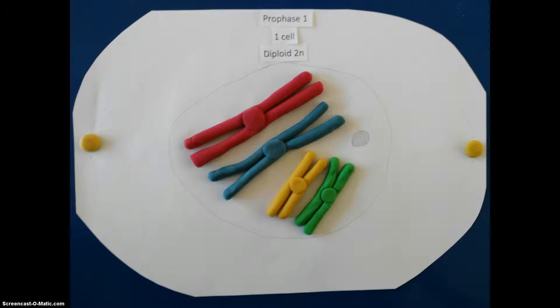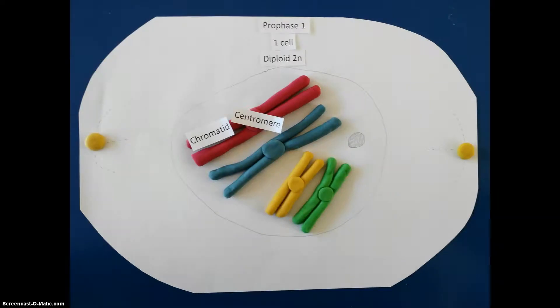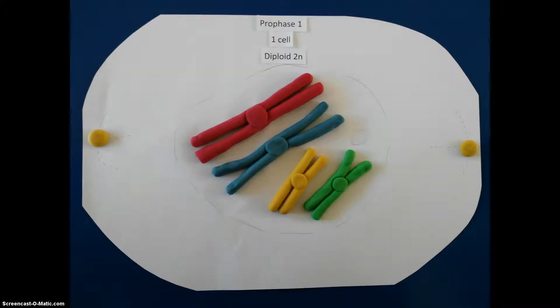Prophase 1. Chromosomes in the nucleus shorten to become visible as two chromatids joined by a centromere. The homologous pairs of chromosomes are now visible. The nuclear membrane and the nucleolus then start to disappear and the homologous chromosomes pair to make bivalents.